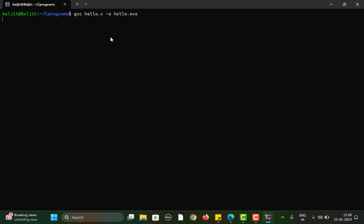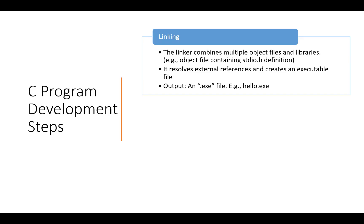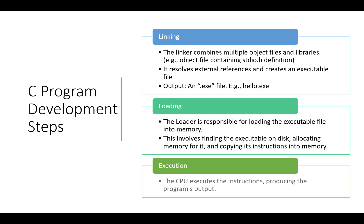This will generate the hello.exe file, which we can then execute with ./hello.exe to get the desired output. When you run ./hello.exe, the last two steps are involved: first is loading, done by the loader. The loader loads the executable file into memory — this involves finding the file on your disk, allocating memory to it, and copying the instructions into memory. Finally, execution happens, which is nothing but allocating the CPU to execute those instructions and produce the final output.